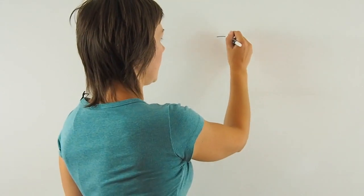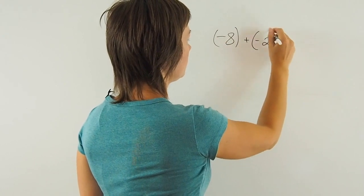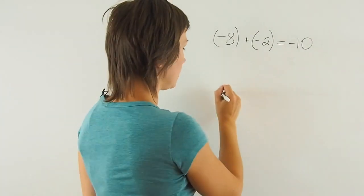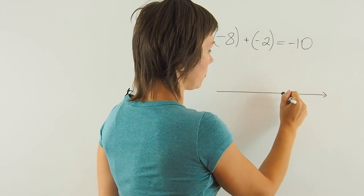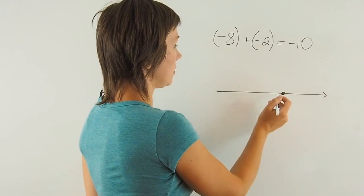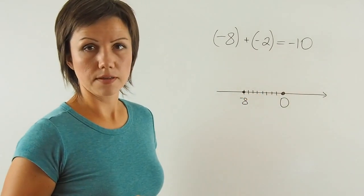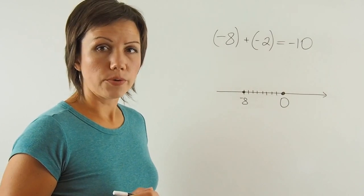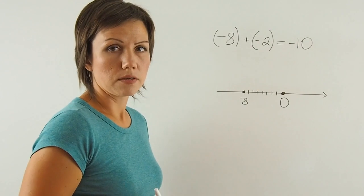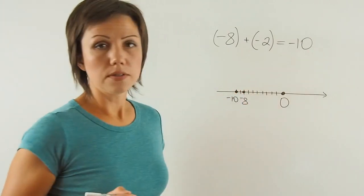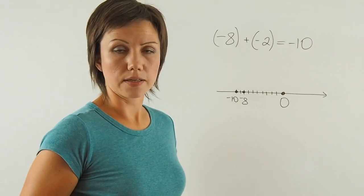In order to add two negative numbers, add their absolute values and put a negative sign in front of the sum, like this. Negative 8 plus negative 2 equals negative 10. On a number line, it looks like this. Say this is the origin — this is 0. I start at 1, 2, 3, 4, 5, 6, 7, 8, at negative 8. This is my first point. And then I'm adding 2 in a negative direction to this point, so I'm moving to the left: 1, 2, which brings me to negative 10. And that's exactly what we got when we added the two negative numbers together.